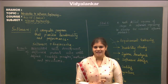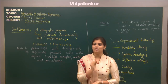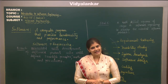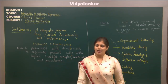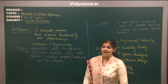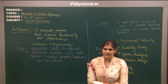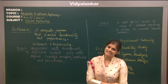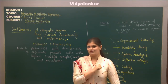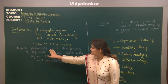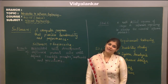Before we proceed, let's understand what we mean by the term software. Software is basically any computer program that provides functionality and performance. Software engineering is made up of two terms: software plus engineering. Software is a collection of executable codes. Engineering deals with development of products using well-defined scientific principles. So combining these two terms, software engineering is a branch associated with development of software products using well-defined scientific principles, methods and procedures.